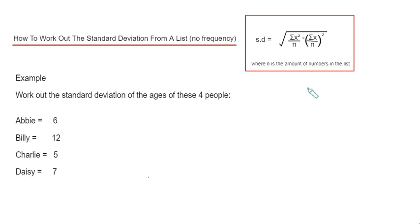First of all, we need to get these key values in our formula. The first one is n. We have four people, so n is four.